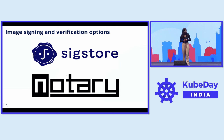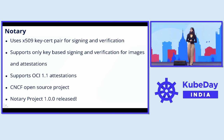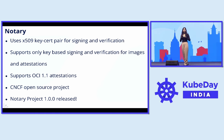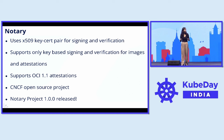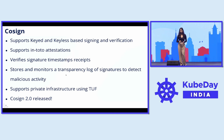A signature can be created using multiple tools and mechanisms. There could be a CA authority verifying your signature, or an OIDC provider verifying your identity. There are mechanisms like storing the timestamp of when a signature was made and having a transparency log of signatures. The two tools we'll be discussing today are Cosign and Notary. Notary is a simple, easy-to-understand, straightforward way to achieve image signing and verification using X.509 key-cert pairs. It supports OCI 1.1 attestations and is a CNCF open source project.